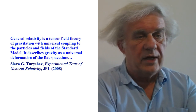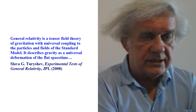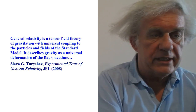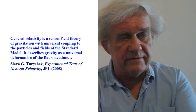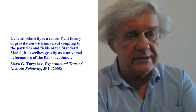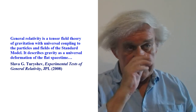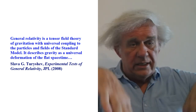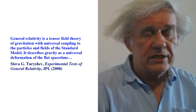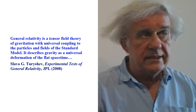This comes from a paper which says: general relativity is a tensor field theory of gravitation with universal coupling to the particles and fields of the standard model, meaning quantum mechanics. It describes gravity as a universal deformation of the flat space-time. So you have flat space-time, you warp it — like I showed last week — and when you have that curvature, now you have gravity. That's the theory.